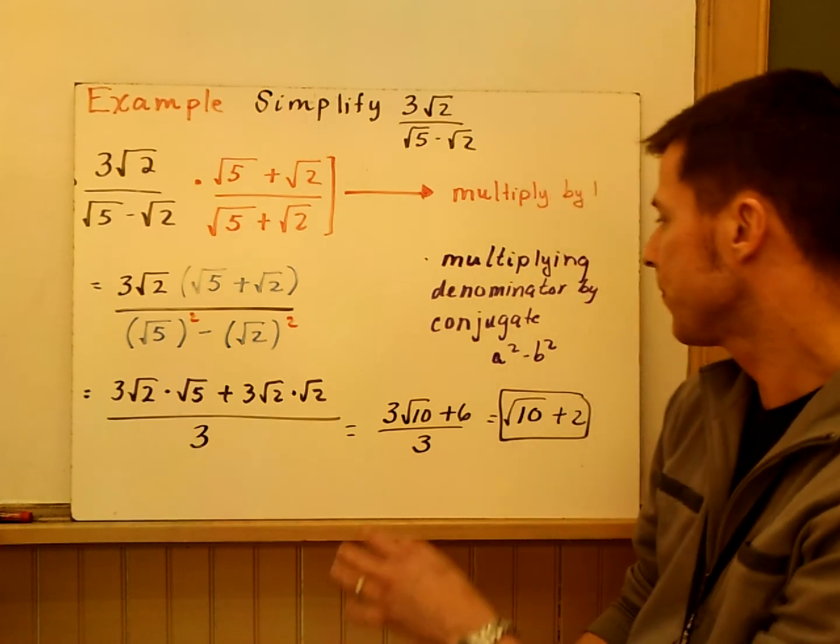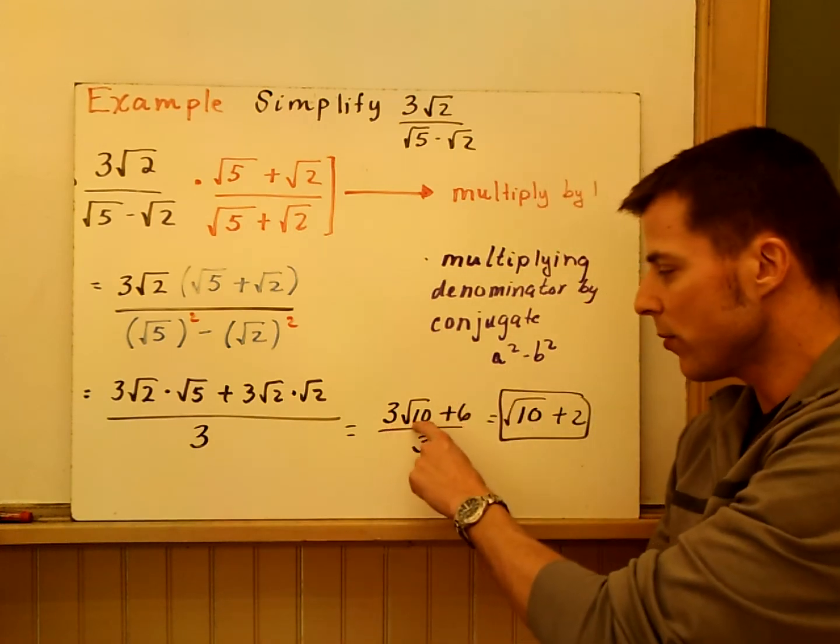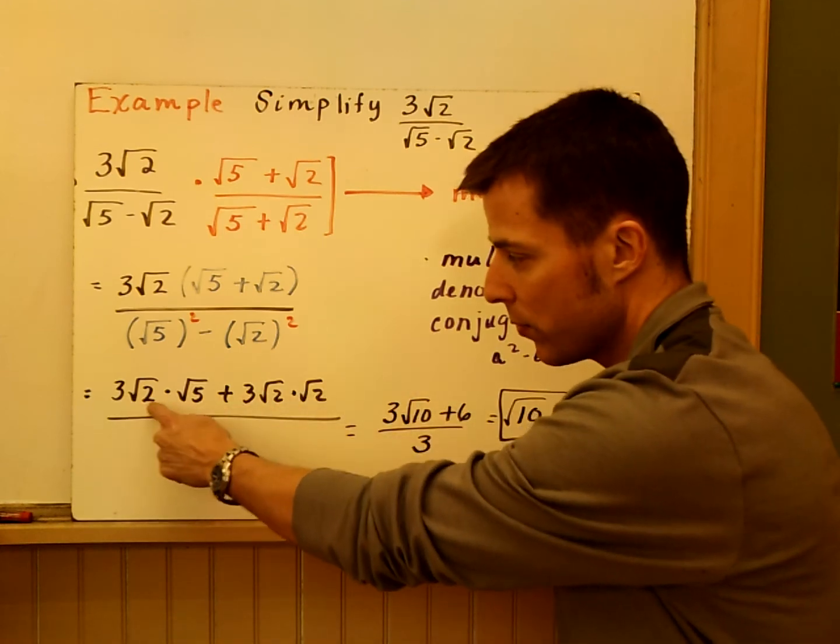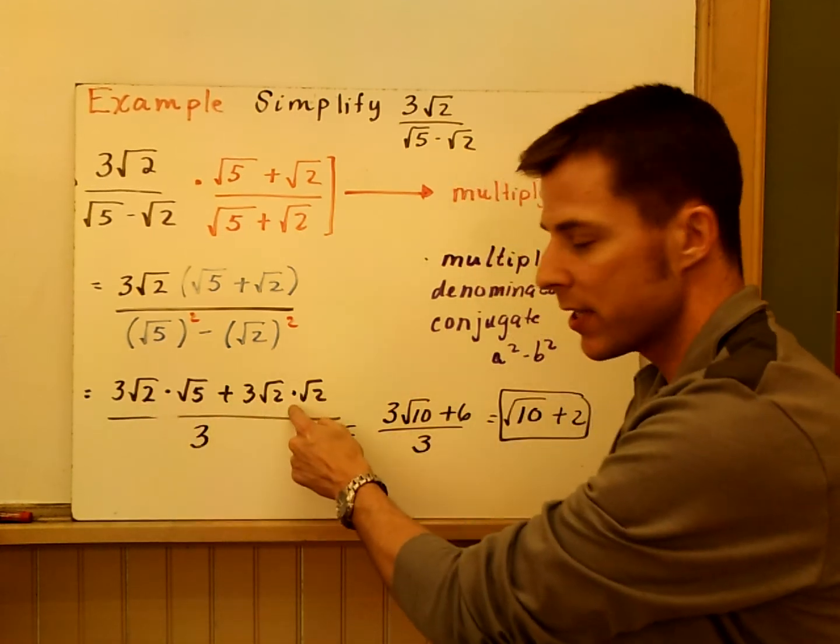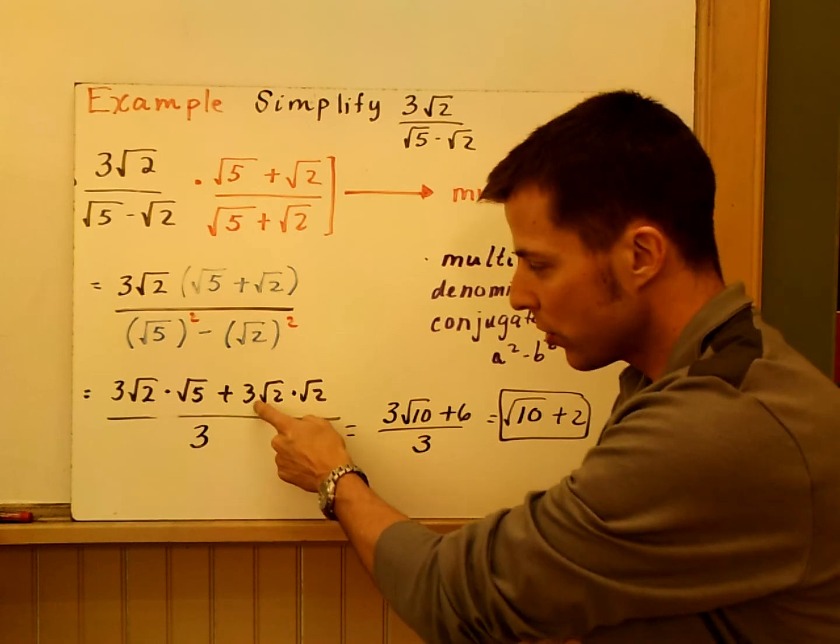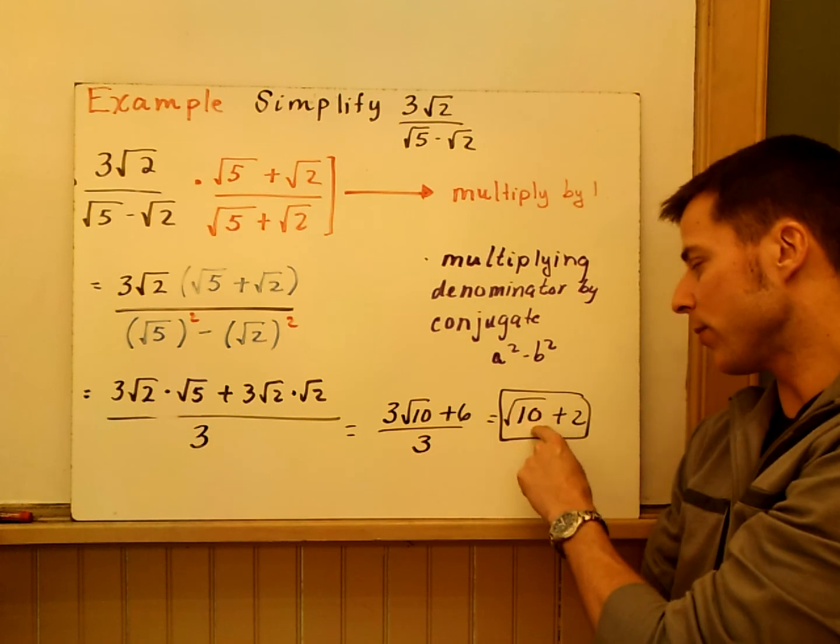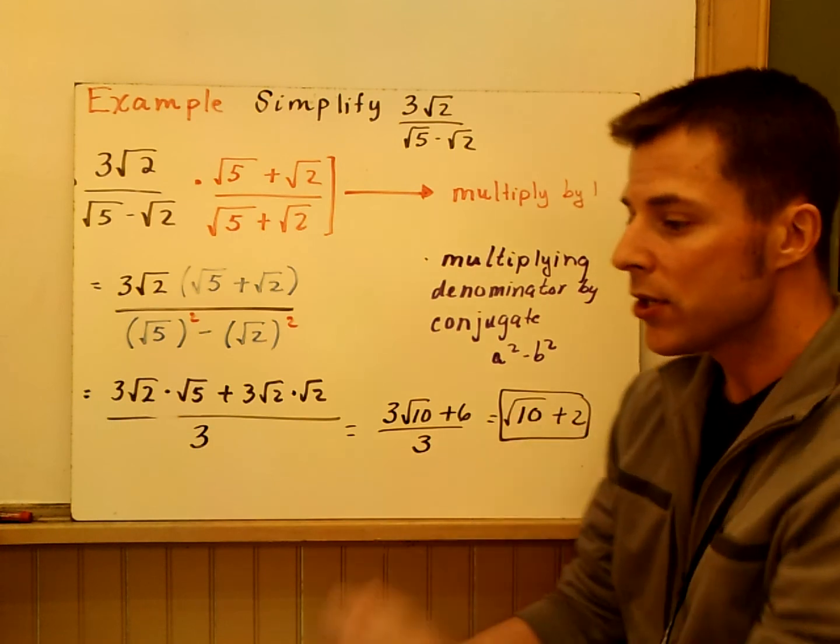The square and the square roots undo each other. And this becomes 3 root 10 plus 6. So you have 3 root 10 is right here. And then this is 3 times root 4 which is 2. Root 4 is 2. So 3 times 2 is 6. And I factor out a 3 of all this and I'm left with root 10 plus 2. So that is binomial radical expressions.